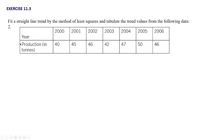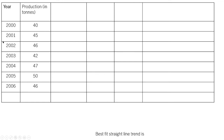Moving on to the next question. For years 2001 to 2006, the production in tons data is given. Again, we need to fit a straight line trend by the method of least squares and find the trend values. The data is given in the question. We have year, production in tons, xi, and y. x equals xi minus the middle year, which is 2003, so x = xi − 2003.